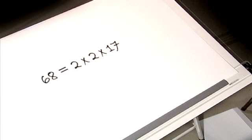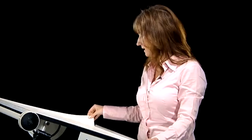For example, take the natural number 68. It can be written as 2 times 2 times 17, or also as 17 times 2 times 2. The primes are always unique up to the order inside the product.